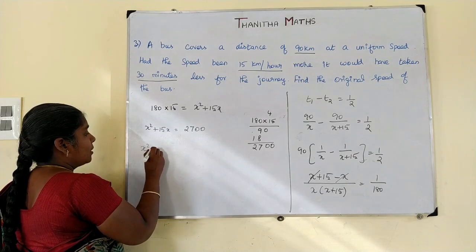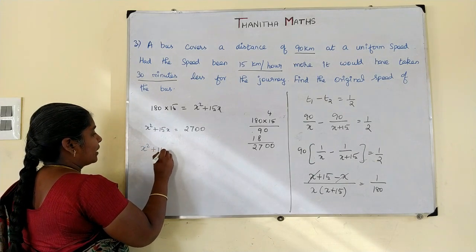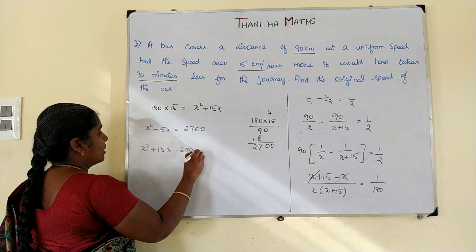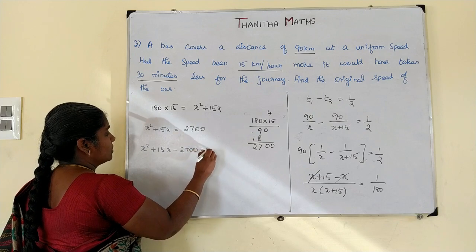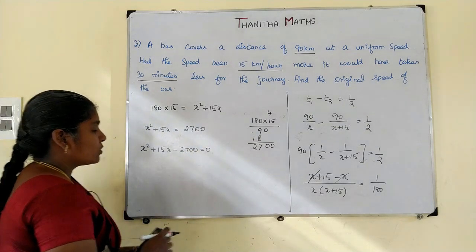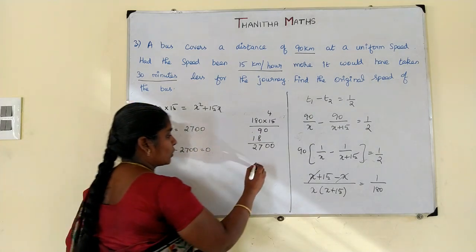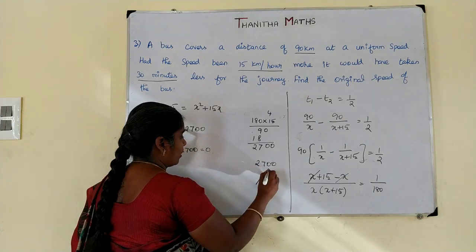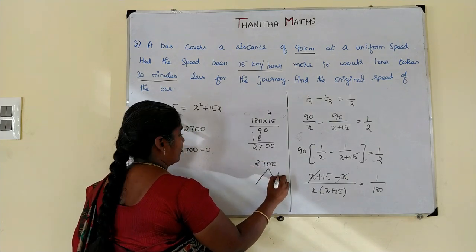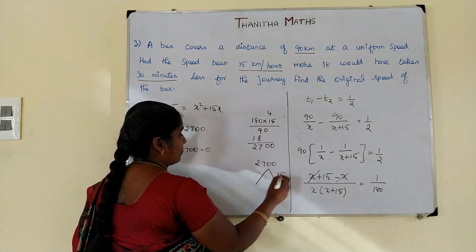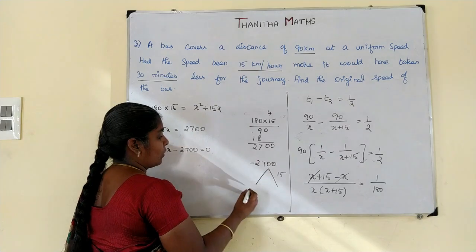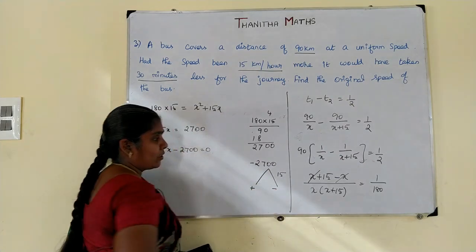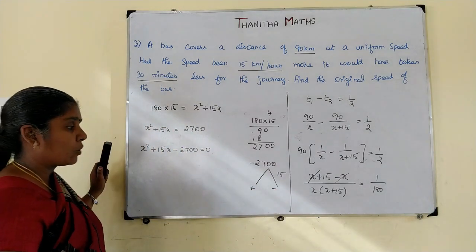So x squared plus 15x minus 2700 is equal to 0. To factor, we need two numbers that multiply to 2700 and subtract to give 15 — one positive and one negative.